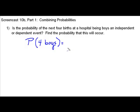So that means that we are going to be looking at the probability of the first birth times the probability of the second birth times the probability of the third birth times the probability of the fourth birth. Since there are two possible outcomes, a boy or a girl, and we are looking for a boy, the probability that the first birth will be a boy is one half.